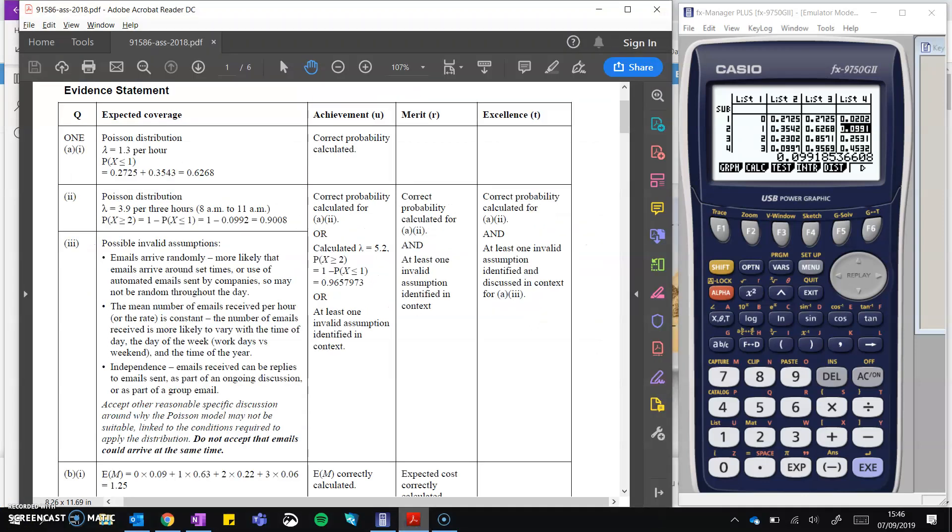And we'll take a little look at the mark scheme. So we've got a U mark being given for a correct probability calculated in part two, or at least one assumption identified in context. You must talk about it being specific to the situation, not just say it's not random. Then merit is if you do the correct probability calculated and one assumption in context, and an excellence mark, correct probability, and at least one invalid assumption identified and discussed in context. So the difference between the R and the T mark there is that it got discussed. So you actually talk about it more than just identifying the assumption in context.